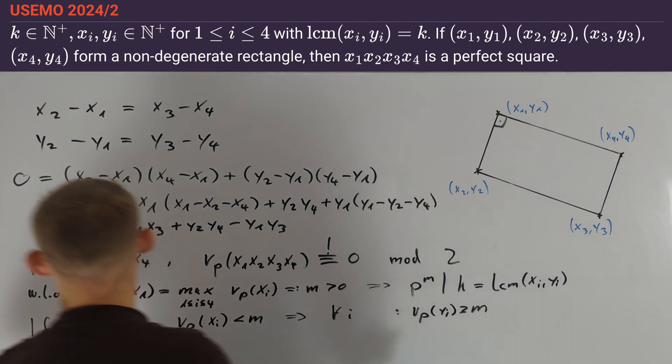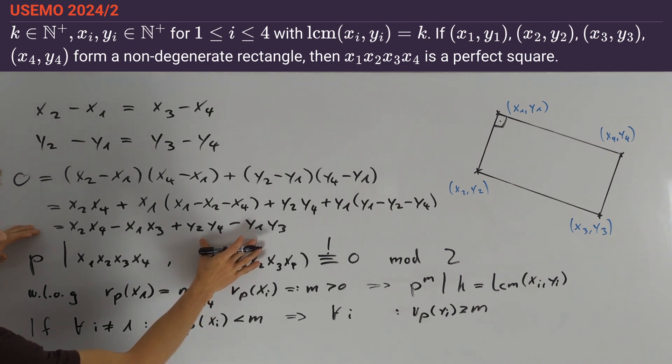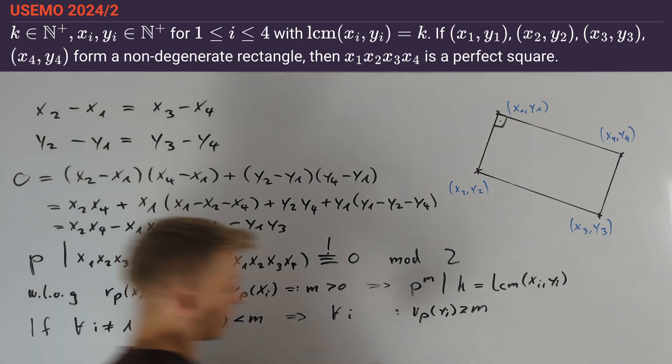Now we take a look at our third equation. Here we see that all terms containing a y are divisible by p^m. Moreover x1 is also divisible by p^m, therefore x1x3 is as well. This implies that x2x4 is also divisible by p^m.